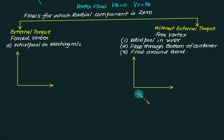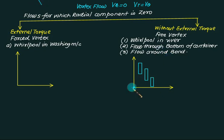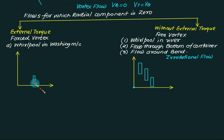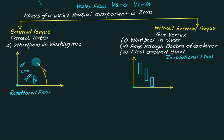In free vortex, the fluid element rotates about the center but does not rotate about its own axis — it remains oriented the same way. Therefore, free vortex is an irrotational flow. Rotational flow means the particle rotates about the central point as well as about its own axis. In forced vortex, the fluid particle changes direction and rotates about its own axis as well, making it a rotational flow.